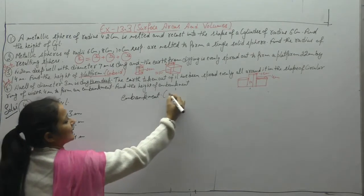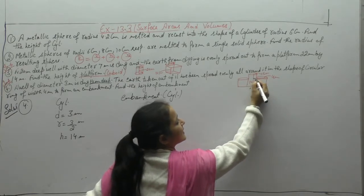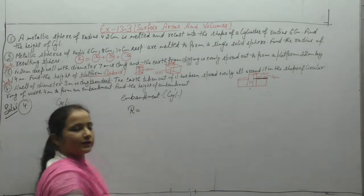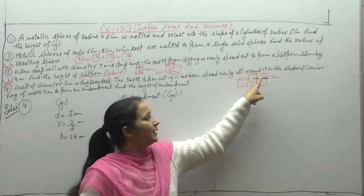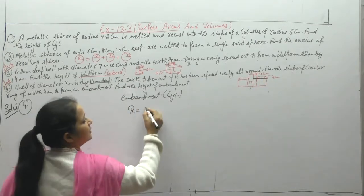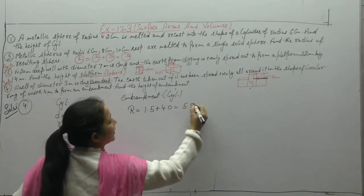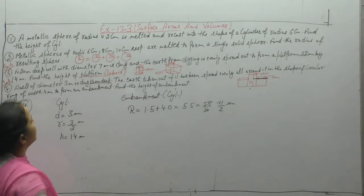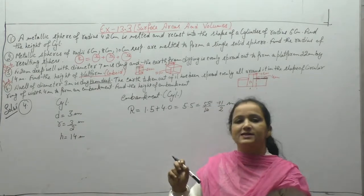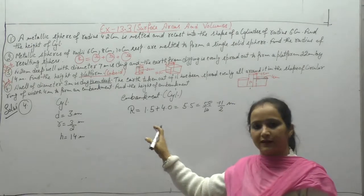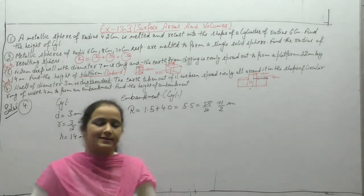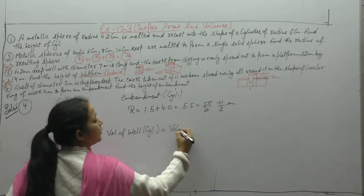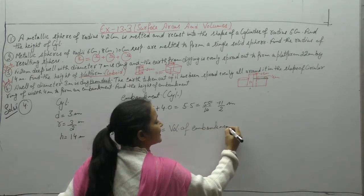The embankment is also cylindrical in shape — a hollow cylinder (circular ring). The inner radius equals the well's radius = 3/2 = 1.5 meter. The outer radius = 1.5 + 4 = 5.5 meter = 11/2 meter. Volume of the well (cylinder) equals volume of the embankment, since the same earth forms both.